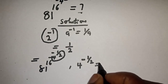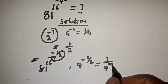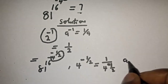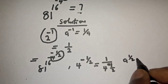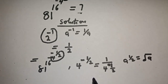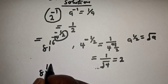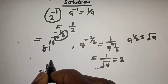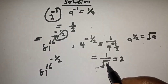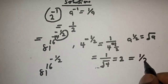4 raised to power minus 1 over 2 is equal to 1 over 4 raised to power 1 over 2. The square root of 4 is 2, so this is equal to 1 over 2.